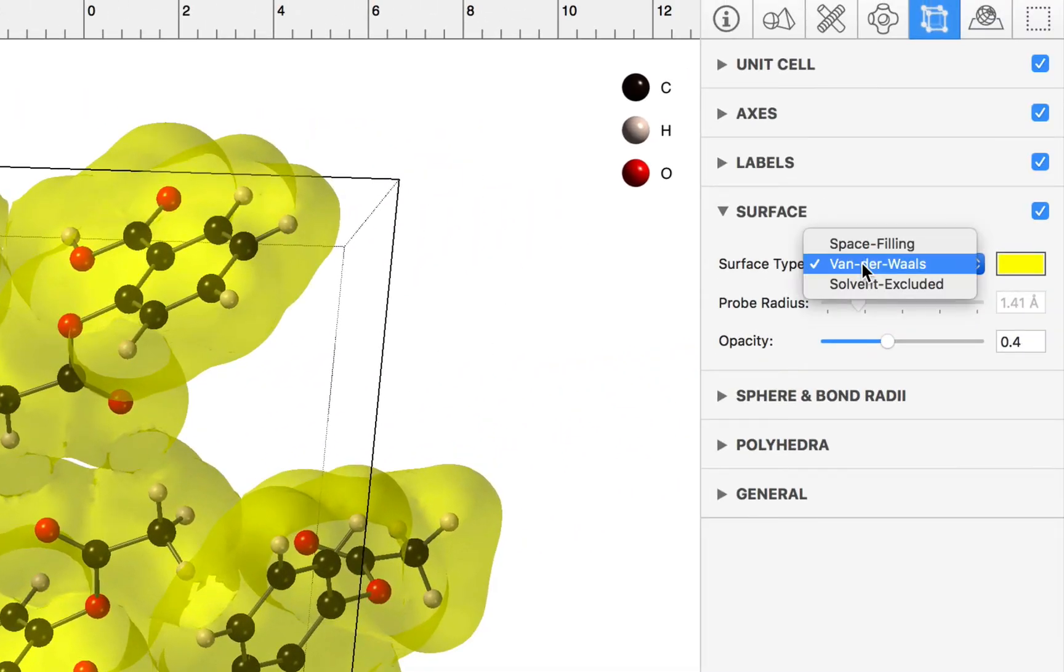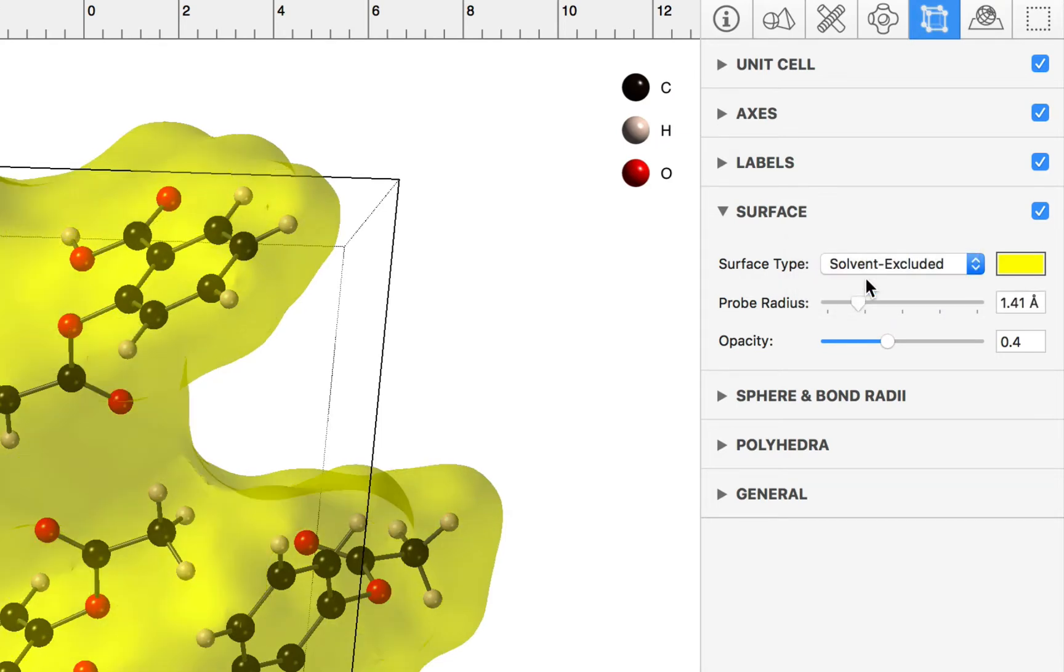We might want to change that to a solvent excluded surface, and we can customize the opacity and probe radius.